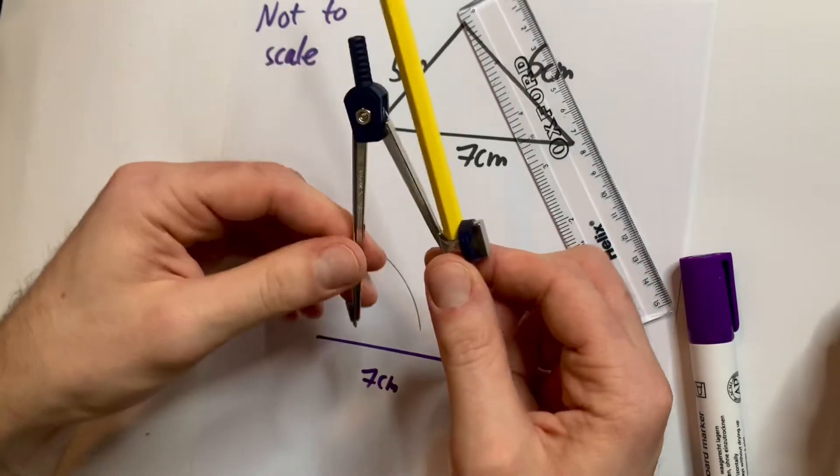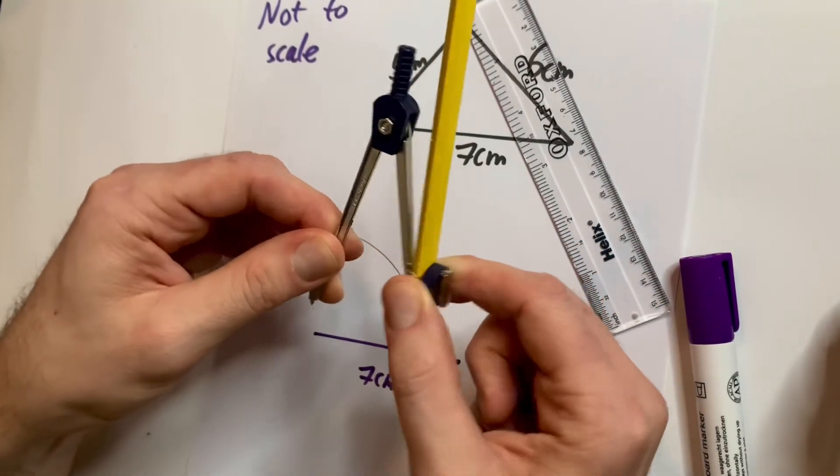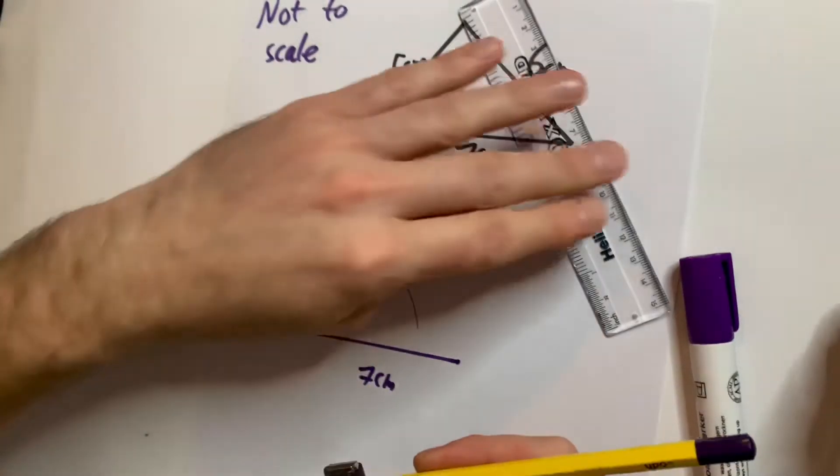Really important, make sure your compass isn't loose, otherwise your compass will go everywhere. And then you're going to do the other side.